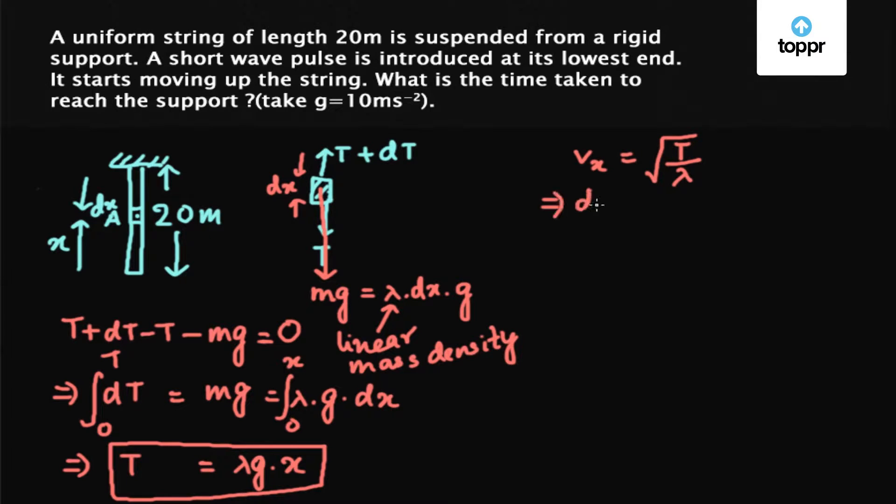So we have v_x equals dx upon dt, where x is the coordinate of this point A, which is x distance from the lowest end. So dx upon dt comes out to be T upon lambda. We substitute the value of T, which is lambda x g. So lambda into x into g upon lambda. Lambda gets cancelled with lambda, so we are left with dx upon dt equals root over gx, which implies dT equals root over gx to the power minus 1 into dx.